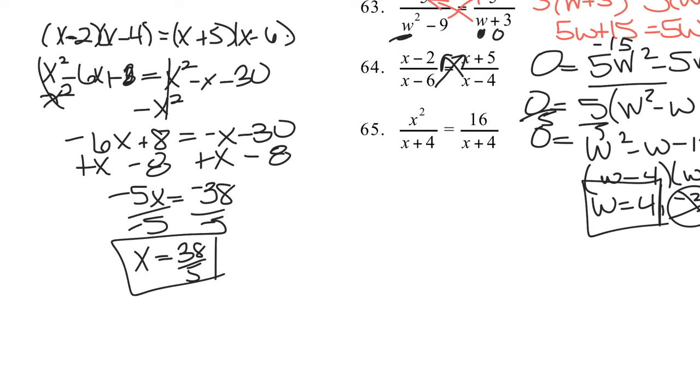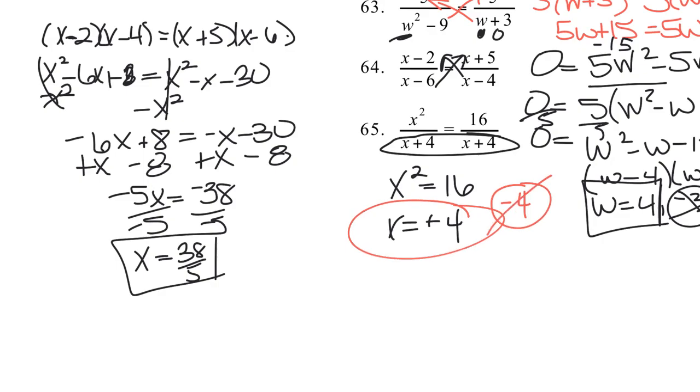And number 65 is kind of special because my denominators are the same. And if the denominators are equal and these two fractions are equal to each other, then the numerators must be equal. So I get x squared equals 16. This can only be done when my denominators are all equal because then the tops have to be the same if they're equal to each other. And so x equals plus or minus 4. If I plug in the positive 4 in the denominator, I'm good. 4 plus 4 is 8, but the negative 4 gives me 0, so that's extraneous. So my only answer is the positive 4, because negative 4 is extraneous.